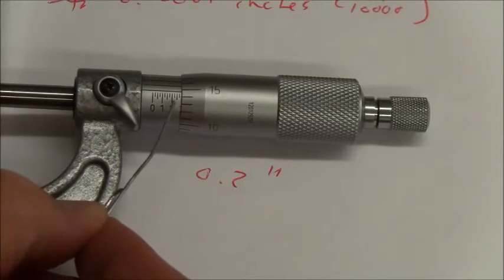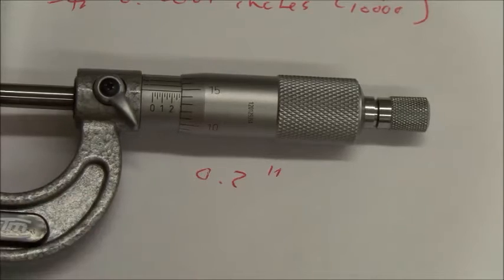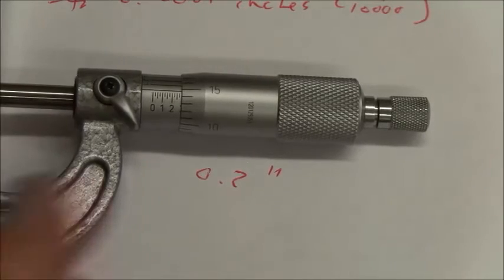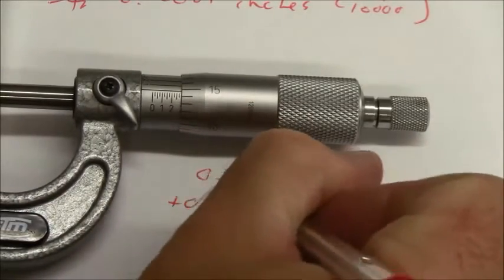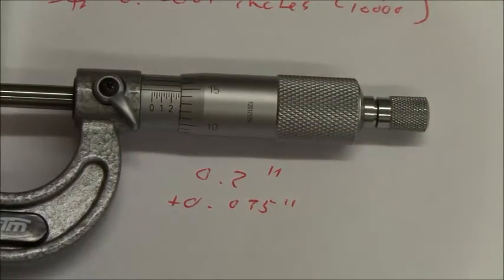Then we look at the little gradations after. There's a .025, .050, .075. That's seventy-five one-thousandths. So point zero seven five inches.